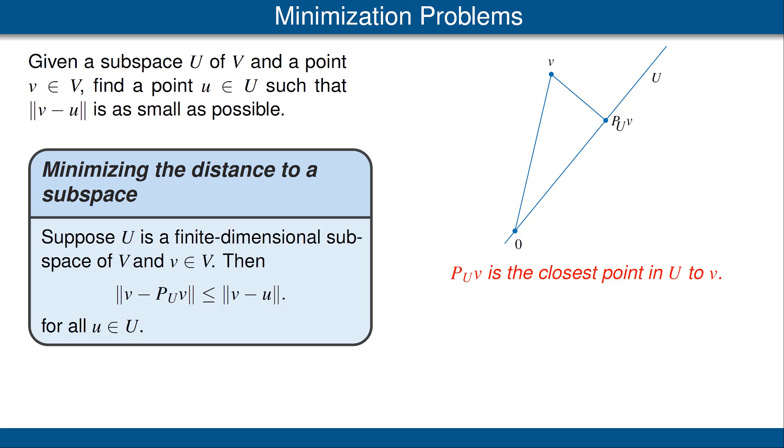and we're trying to find the point in the subspace U that's closest to v. As you can see from the picture, that point is the orthogonal projection of v onto the subspace U. In other words, the closest point is P_U applied to v.